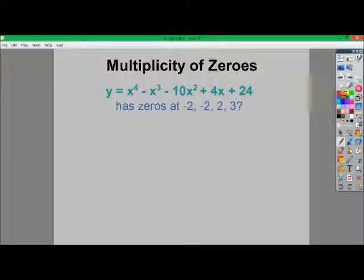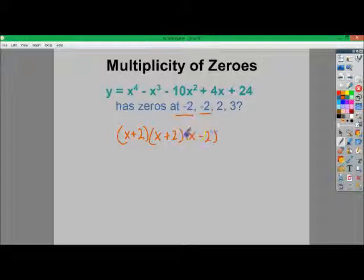Seems like a mistake, doesn't it? Like I shouldn't have negative 2 and negative 2, but it absolutely does happen. The proof is when I factor it out all the way, I end up with x plus 2 times x plus 2 times x minus 2 times x minus 3. This is the factored form of this polynomial.